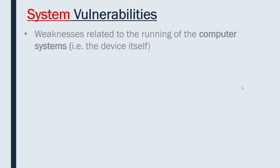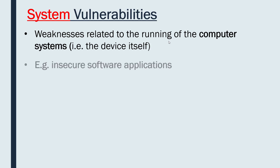System vulnerabilities are our final category — the most technical of the three. Going from environmental, which is outside your building, to physical, which is inside your building, system vulnerabilities are inside the computer itself, or more precisely, about how the computer is running. These are vulnerabilities within the device itself, either in the software or in the hardware.